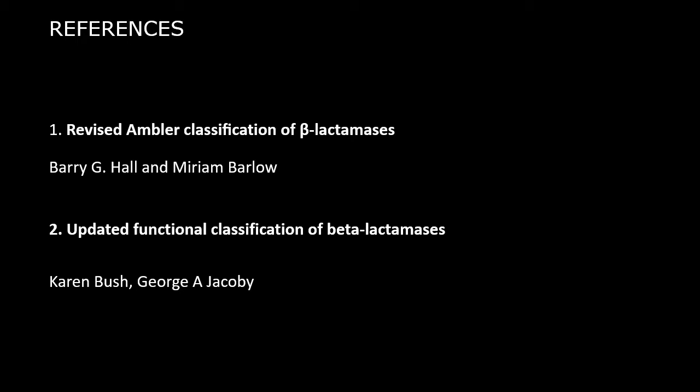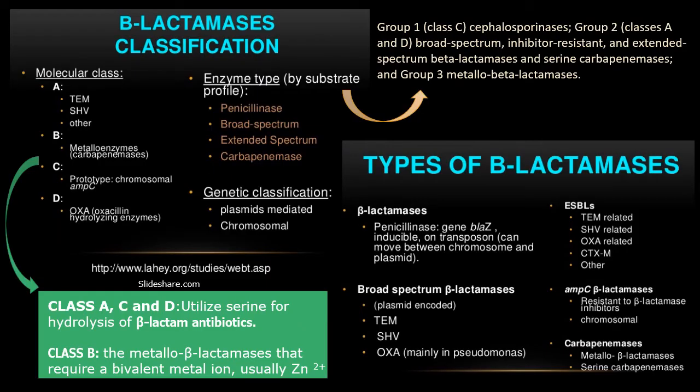All copyrights are reserved to the authors. To elaborate on the classification and types, this is a very good slide taken from SlideShare. You can see the beta-lactamase classification. On the molecular level, A, B, C, and D are four classes, of which B is for metallo-enzymes — metallo-beta-lactamases — for example, carbapenemase.